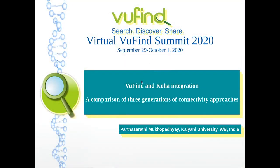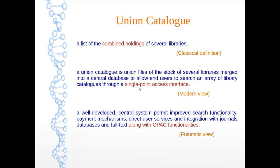We are trying to build a union catalog. The views related to union catalog are important — it is an age-old concept related to the library domain. The classical view is that it is a list of the combined holdings of several libraries. The modern view says it is a single point access interface for the holdings of several libraries. But the futuristic view says it is a single point access interface with a discovery interface along with OPAC functionalities. This is the futuristic view related to union catalog.